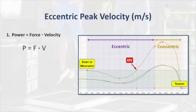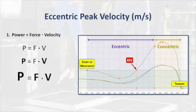Now from baseline, increasing velocity will naturally increase power. However, increasing downward velocity requires greater deceleration forces being put into the ground, thus increasing force as well. Therefore, increasing eccentric peak velocity will increase ground reaction forces, maximize elastic energy storage, and result in improved power and jump performance.